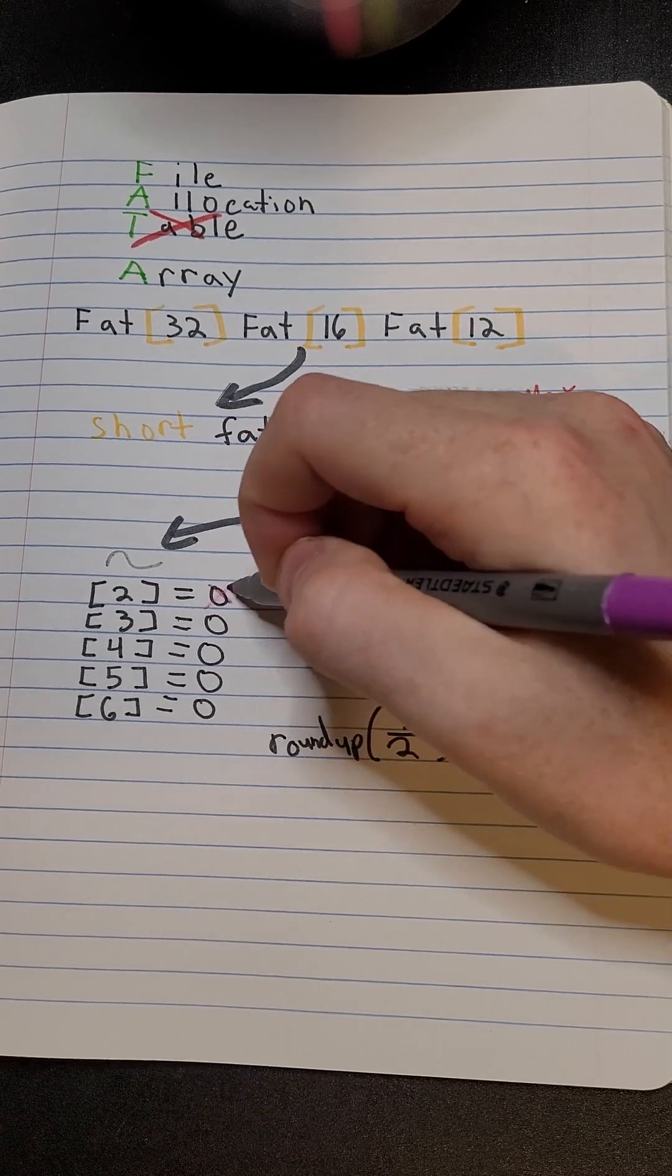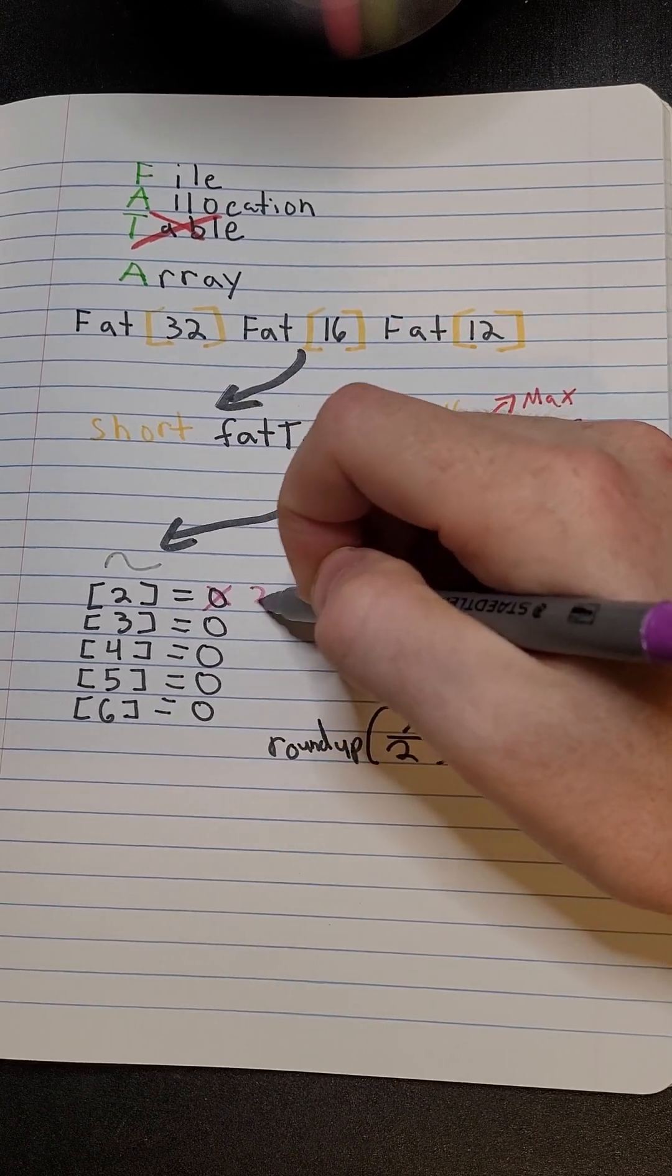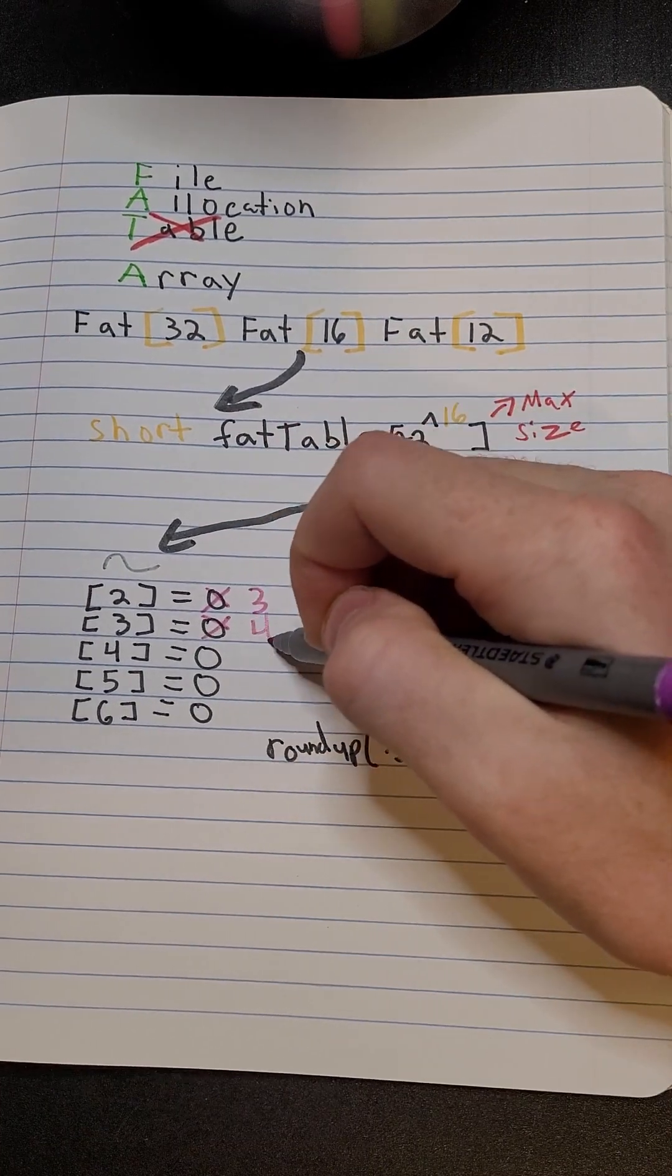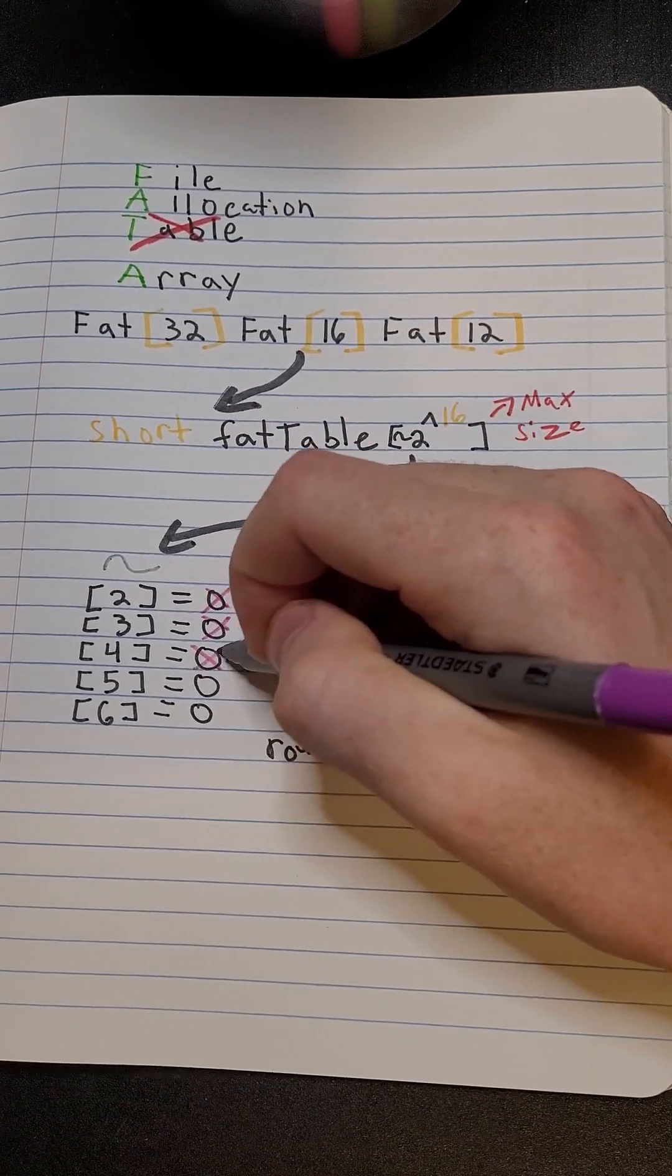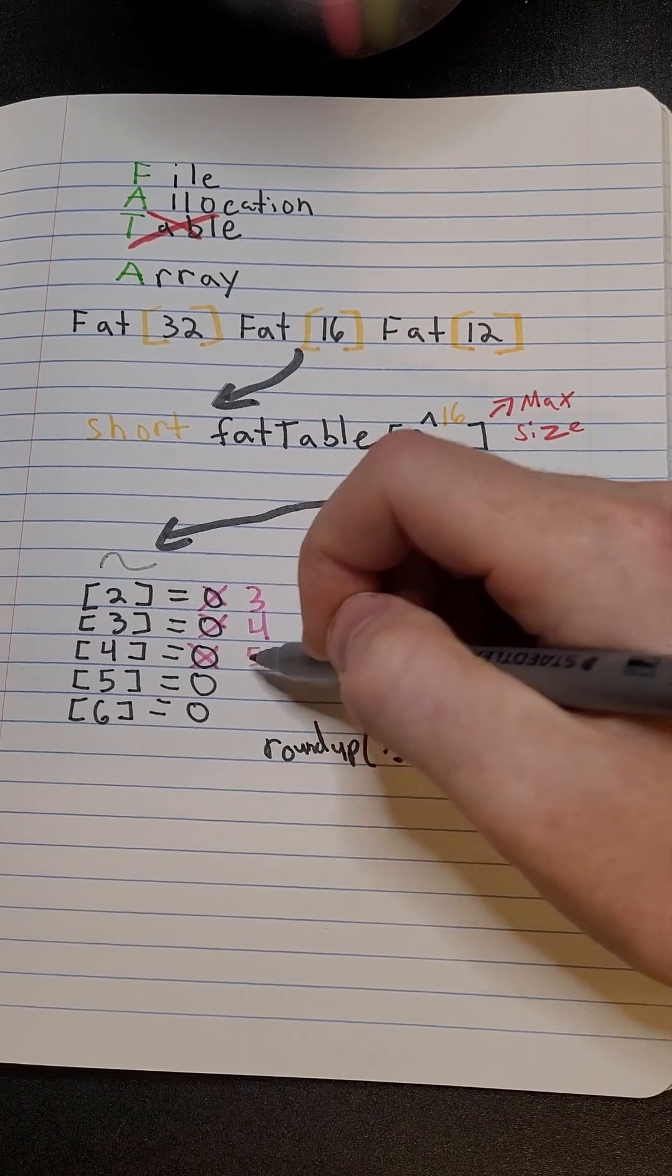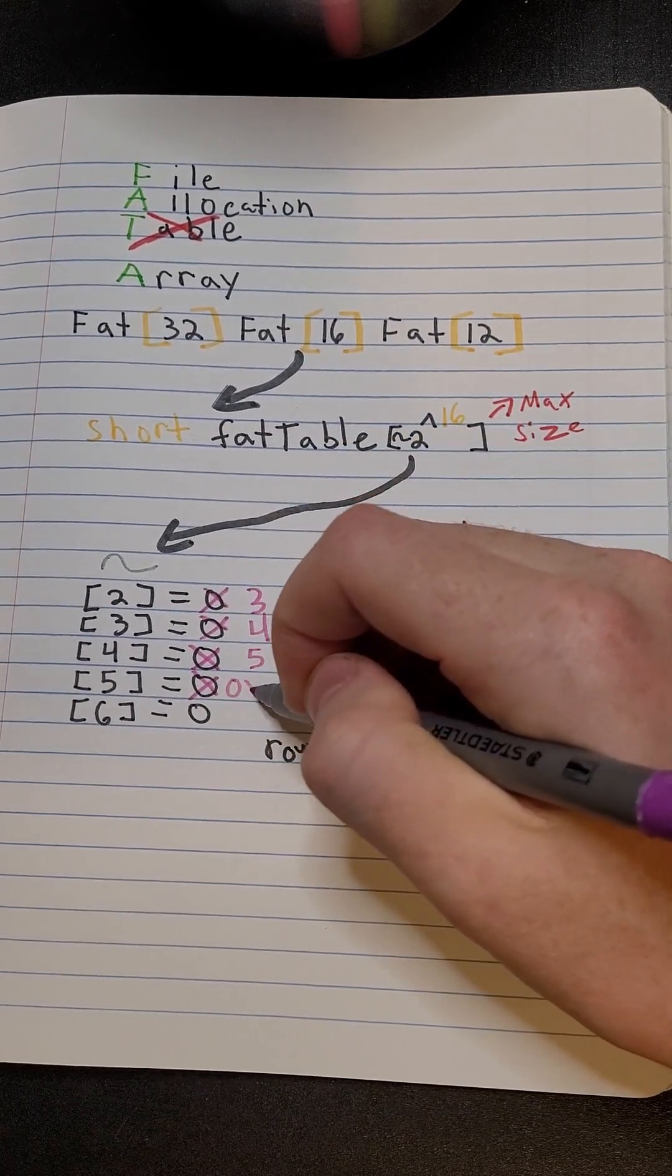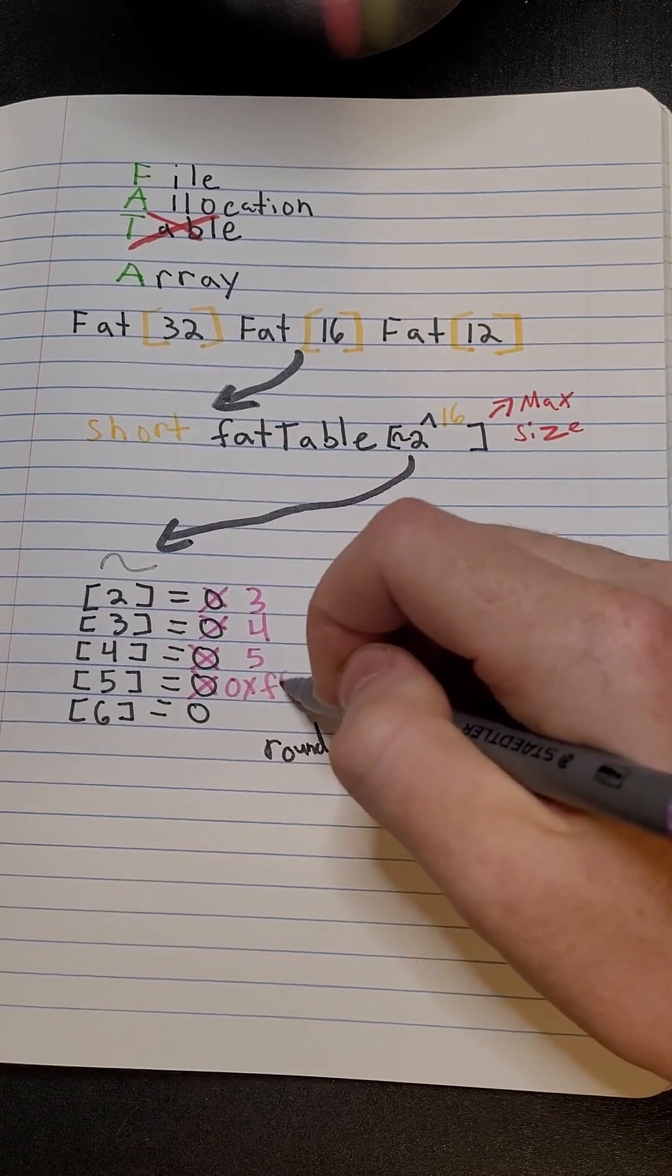And now what we have to do is set the FAT table indices properly. To do this, we find the first free cluster, and if it's the last cluster we need to use, we put a 0xFF in there. Otherwise, we put the index of the next free cluster and keep doing this until the end of the file.